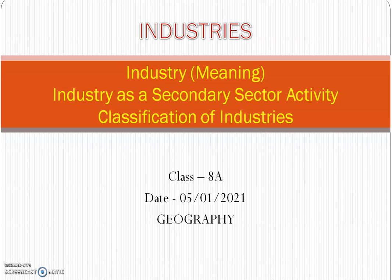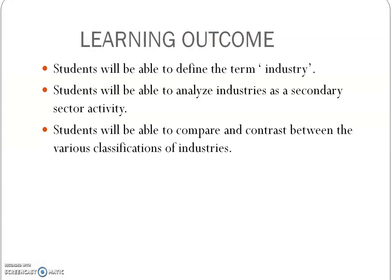So students, without further ado, let us quickly begin with the learning outcomes of today. Once we are done with the discussion, we will be able to define the term industry. Then you will be in a position to analyze industries as a secondary sector activity. And at last, you will be able to compare and contrast between the various types or classifications of industry.